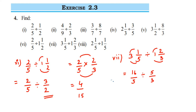Now divide: 16 by 5, division becomes multiplication, take the reciprocal of 5 by 3, which is 3 by 5. We cannot cancel any numbers, so multiply: 16 threes are 48, and 5 fives are 25. The answer is 48 upon 25.